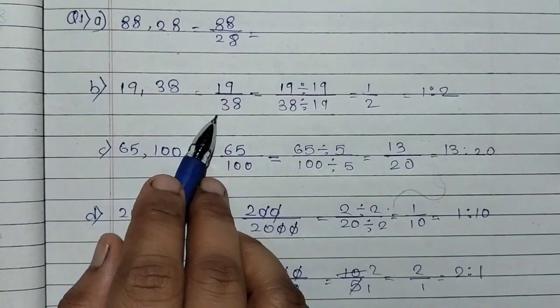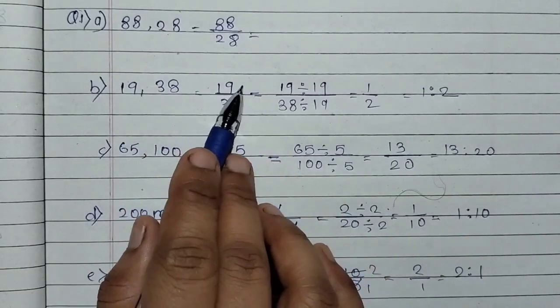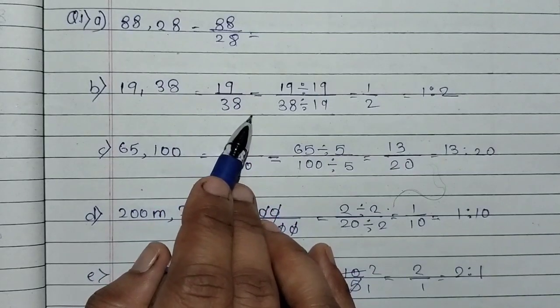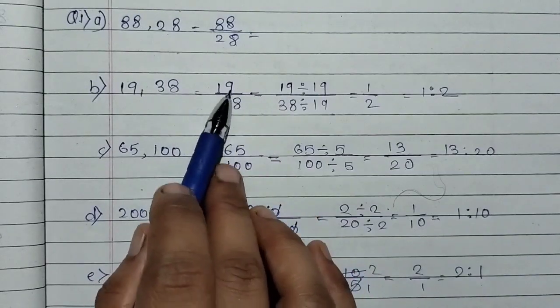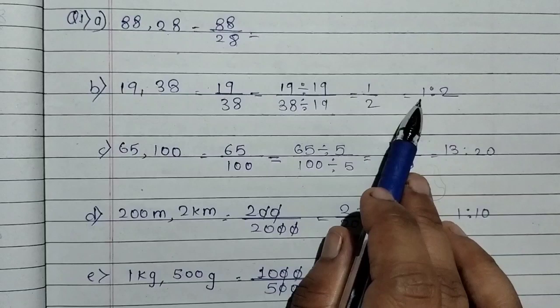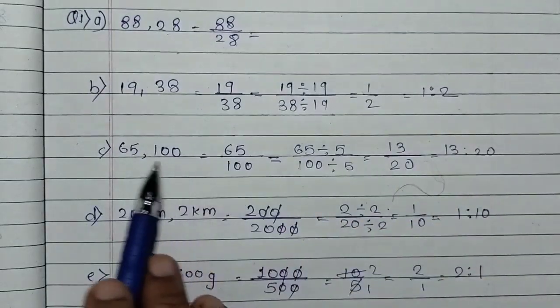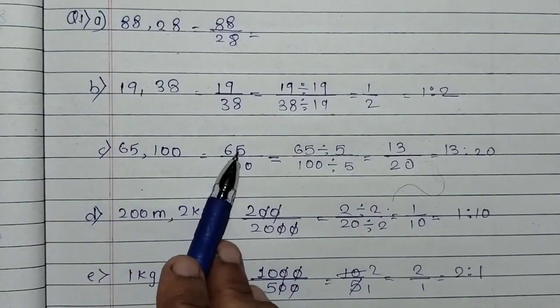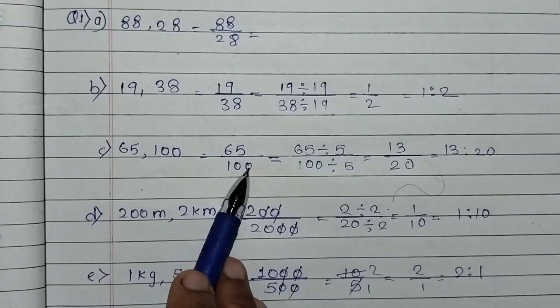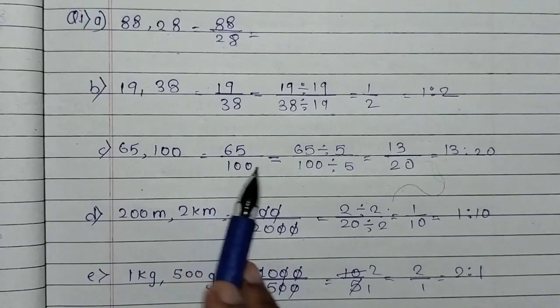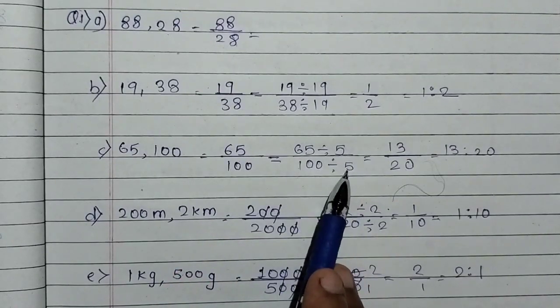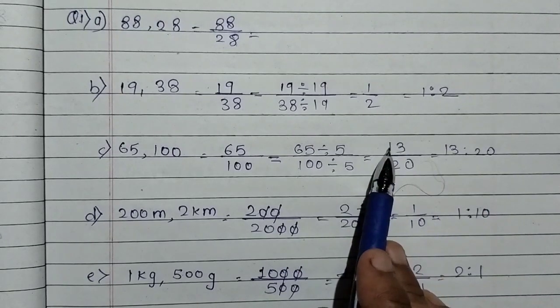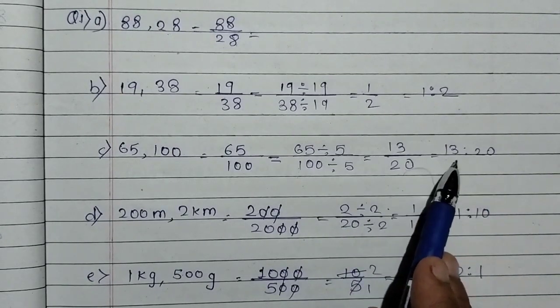Here we will see 88, 28. So this is 88 to 28. In the table, these two numbers are both divisible by 4, so this is 22 is to 7. Next, 19 upon 38. So this is 19 to 38, both numbers are divisible by 19. So this is 1 is to 2. Here we will see 65 upon 100. So last digit is 5, here we will see 0. Both numbers are in the 5 table. I have divided these numbers by 5. So what do we get? 13 upon 20, meaning 13 is to 20.